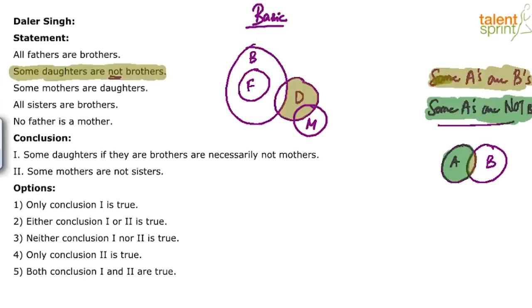The next statement says 'all sisters are brothers,' so all the sisters should come inside brothers. When drawing sisters inside brothers, you could overlap sisters with fathers or daughters, but ideally avoid it for the basic diagram. So sisters are inside brothers but not in contact with fathers or daughters — minimum encroachment. The last point, 'no father is a mother,' is satisfied anyway, but we will put cross marks on fathers and mothers, meaning these two circles cannot touch each other.